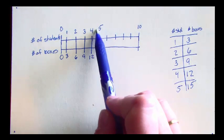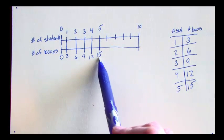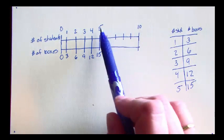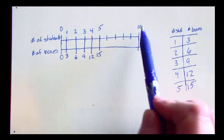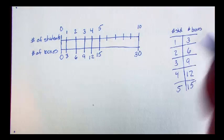I can look and see that if I have 5 students, I have 15 boxes. And if I have 10 students, twice the number of 5, I have 30 boxes, twice the number of 15.